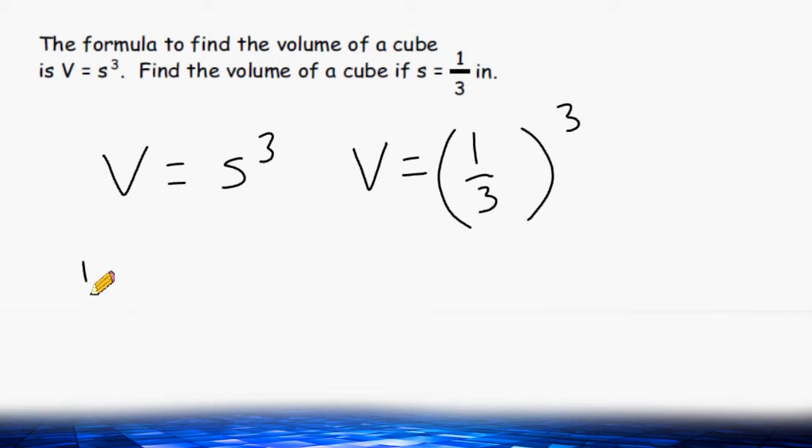So let's take one-third to the third power and write that in expanded form, which is one-third times one-third times one-third.